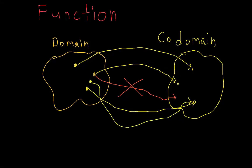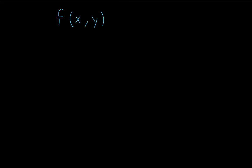For example, say we have this function here. First notice how this function is taking two inputs, x and y, and then the output is one real number. So you plug in x and y and you get a value for the function, which we often call z.